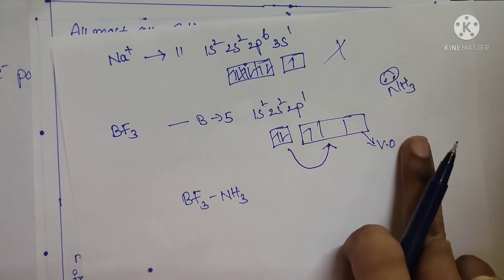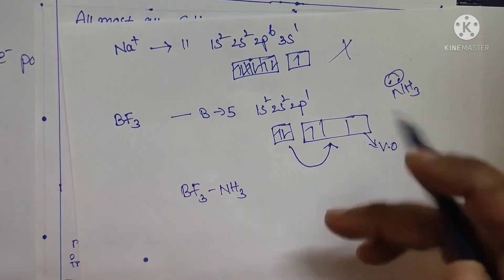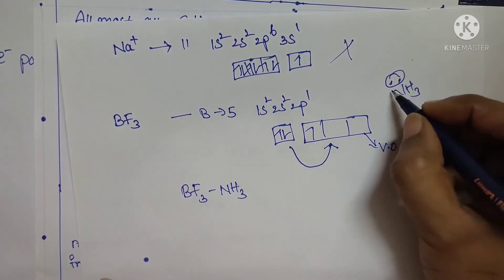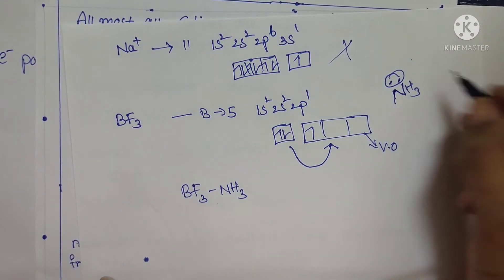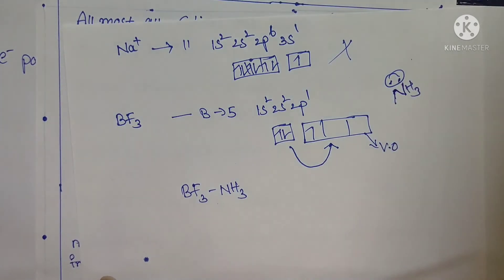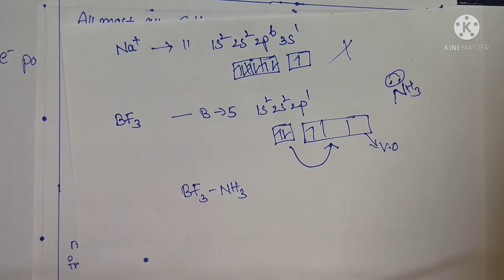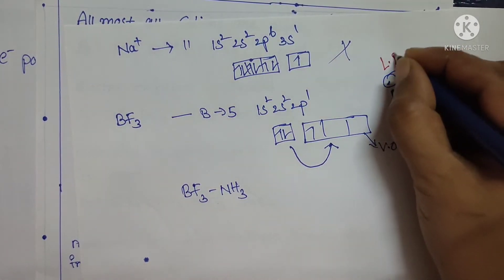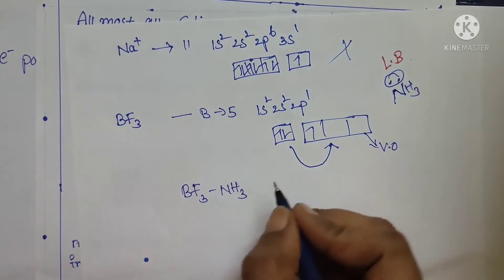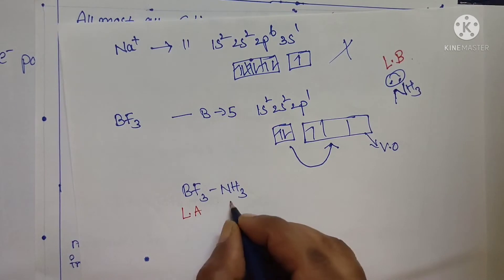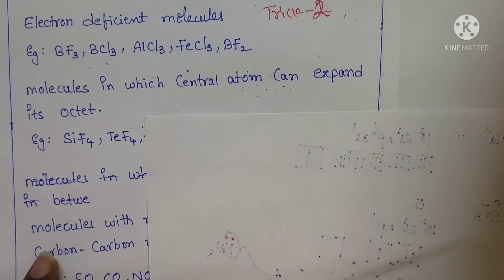In the reaction BF3 + NH3, ammonia has a lone pair of electrons and donates it to boron. Here, boron is accepting the electron pair, so BF3 acts as a Lewis acid. Ammonia is giving the electron pair to boron, so NH3 acts as a Lewis base.